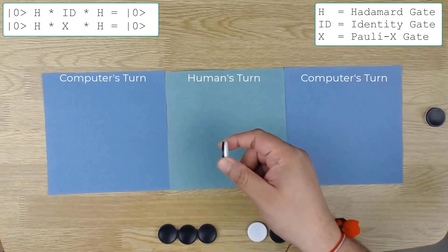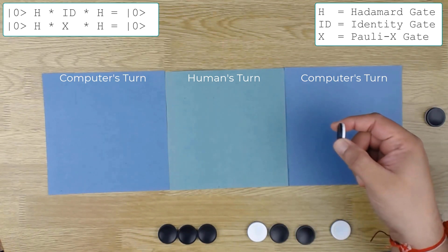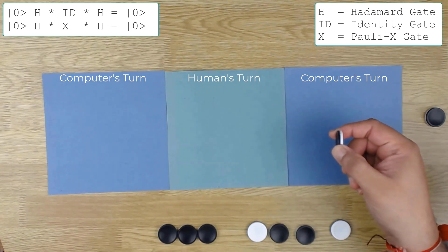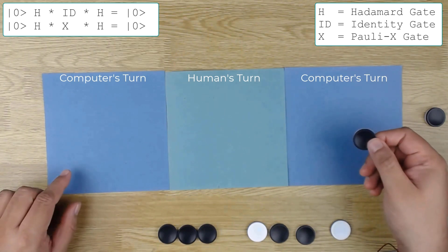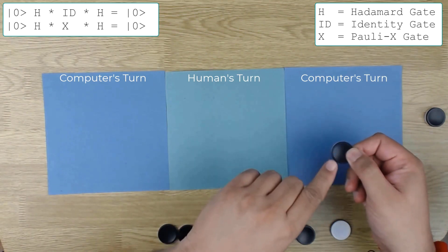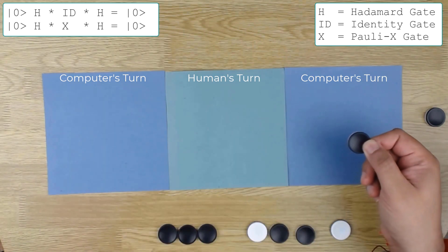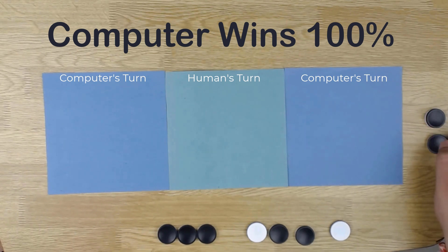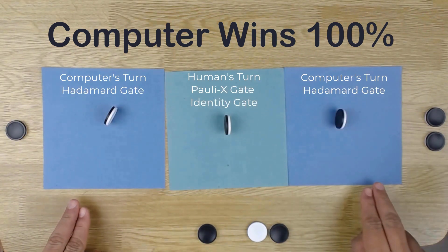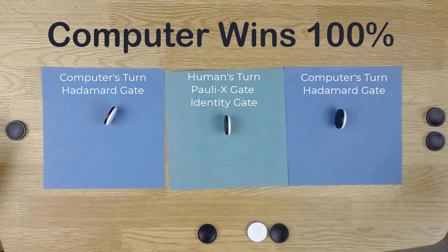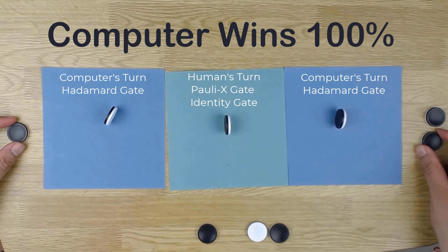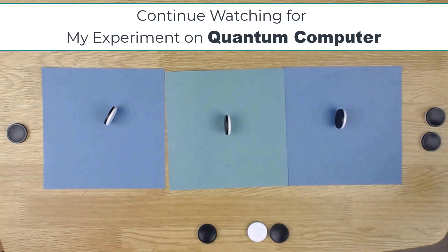Now it is the computer's turn again. Computer applies the Hadamard gate one more time and the result is like this. When you apply two Hadamard gates on any value, you get your original value back. That means our computer wins 100% of the time. Two Hadamard gates with either a Pauli-X or identity gate in between will not make any difference. The output of this entire circuit will be exactly the same, and that means our computer will win 100% of the time.